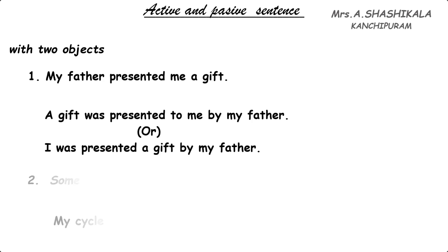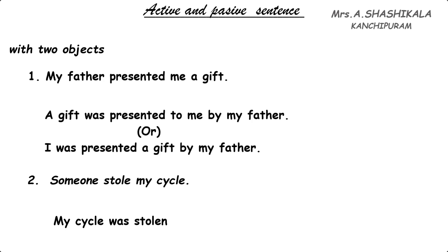It is understood that if the agent is not known, we can omit it. For example: 'Someone stole my cycle.' Here 'my cycle' is the object and 'stole' is the verb. The passive form is 'My cycle was stolen.' You can optionally write 'by someone', but since it is understood that somebody took the cycle, we can stop the sentence there.